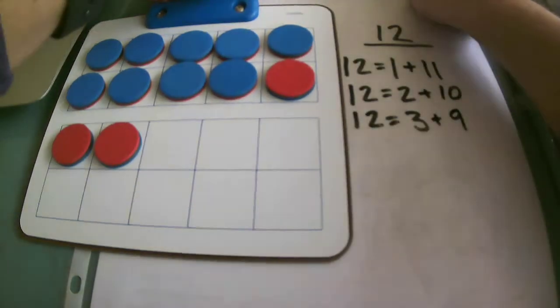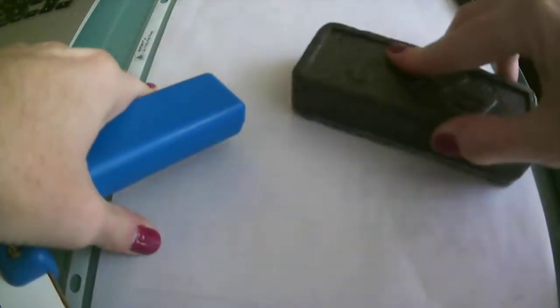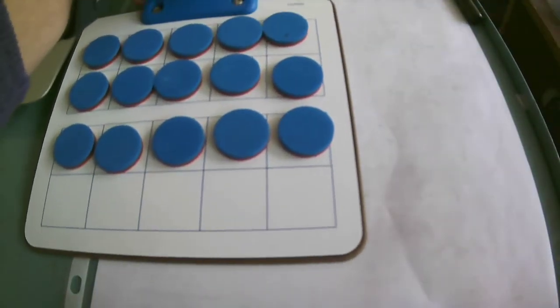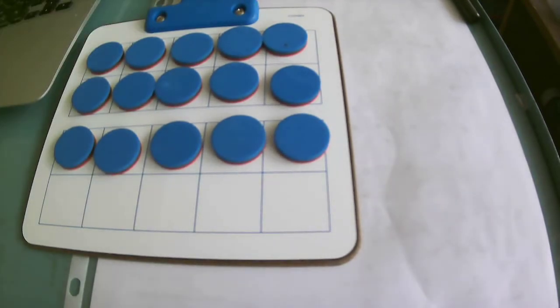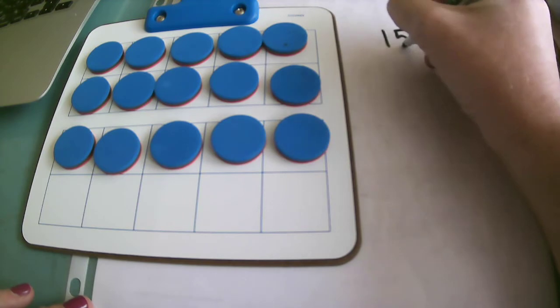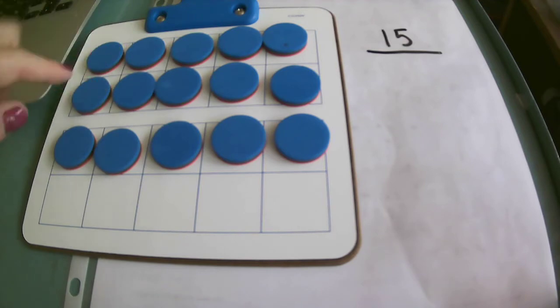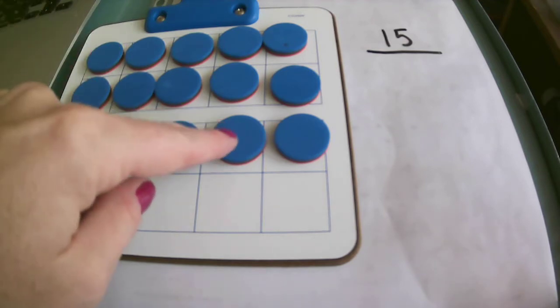Let's switch numbers and try to break apart another number. This time we're going to be working with the number 15. I have 15 counters on my 10 frames and I know that because I have a 10 frame filled up: 11, 12, 13, 14, 15.